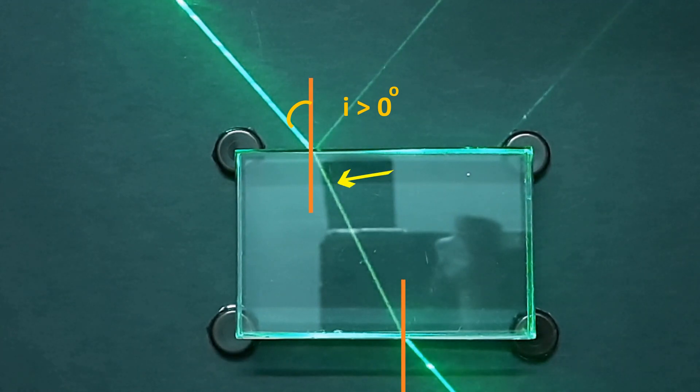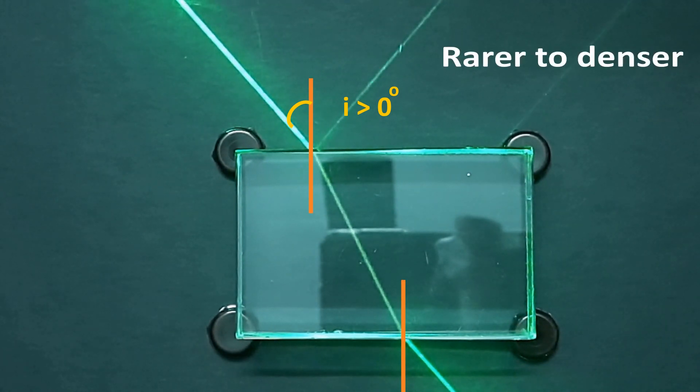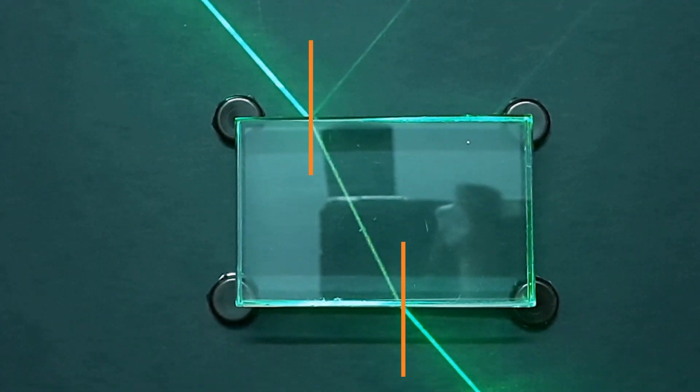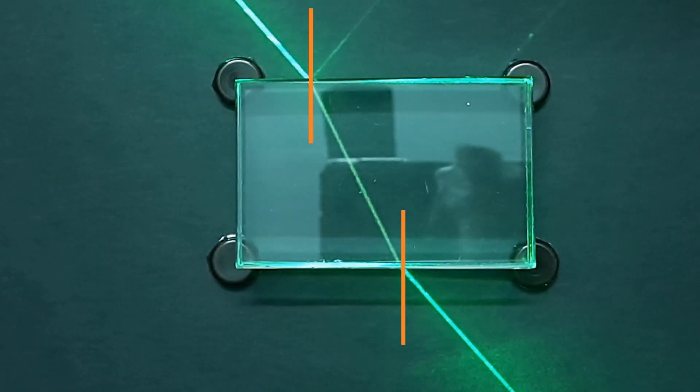When light comes out of the glass slab, the opposite happens—light bends away from the normal. This happens because light is traveling from a denser medium glass to a rarer medium air.